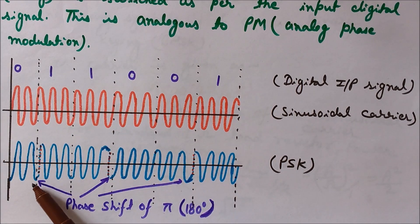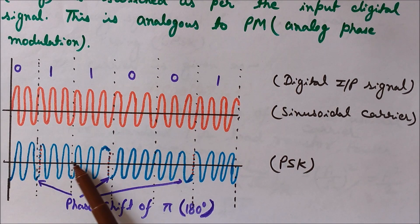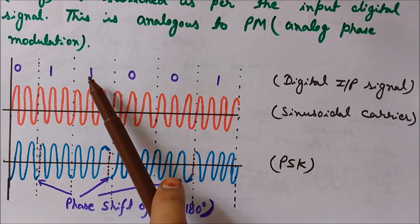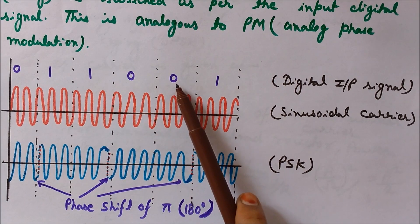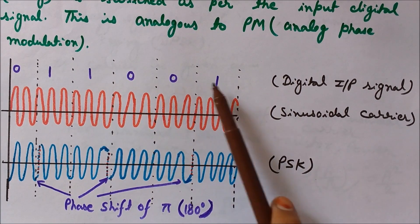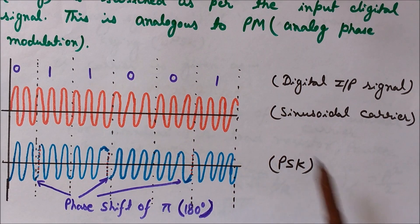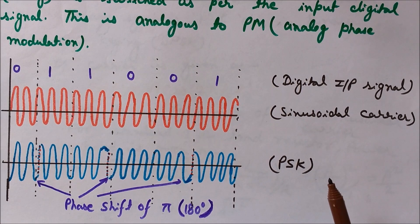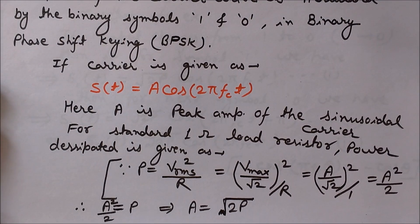Where there is no change from 1 to 1, the signal is passed as it is. At the point from 1 to 0, there is a phase shift of pi, and again at the point from 0 to 1 you can see a phase shift of 180 degrees. This is the PSK — Phase Shift Keying — digital modulation technique, and here you can see that the information of the modulating signal lies in the phase changes of the carrier wave.